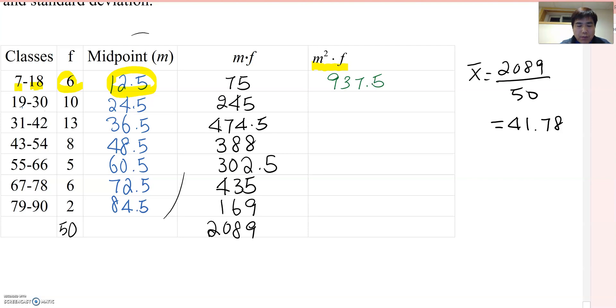Same way, so 24.5 square times 10, then you will get 6,002.5. If you keep on doing it, then you will get this value. And the total sum becomes 107196.5.